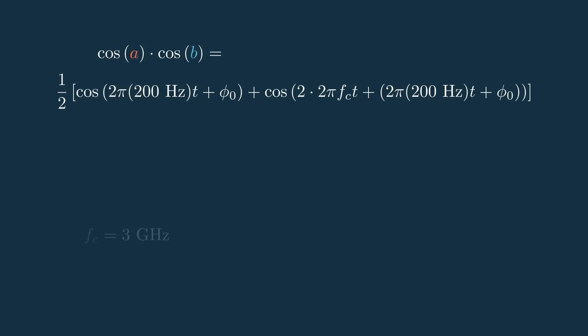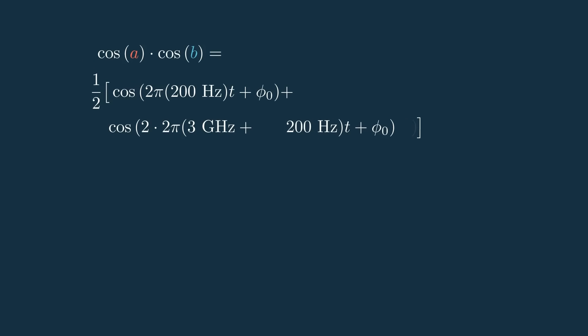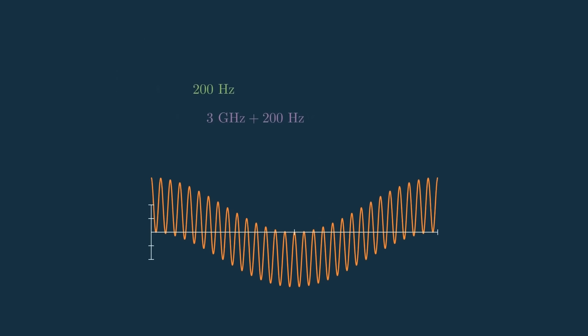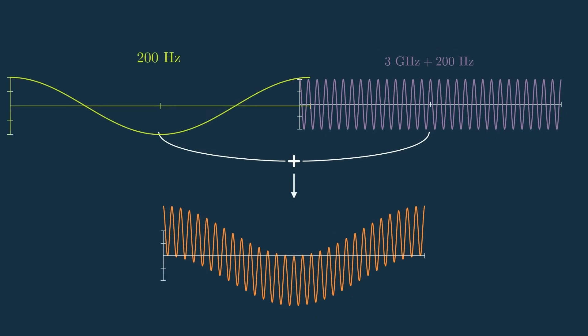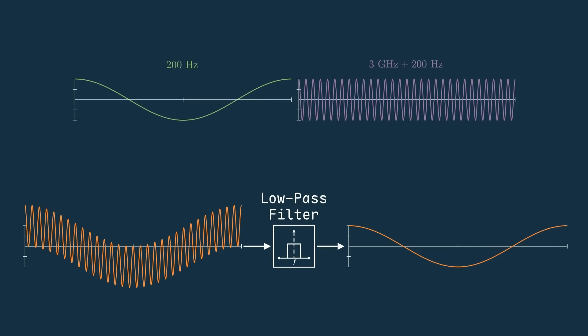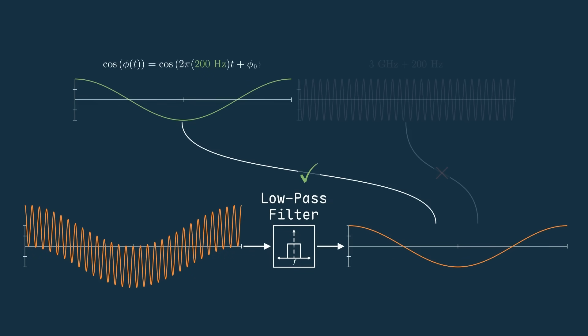Then we can plug in the carrier frequency, which we said before is 3 gigahertz. Arranging this right term a bit, we find that this is a sinusoid oscillating at 2 times 3 gigahertz plus 200 hertz, and this left term is oscillating at just 200 hertz. This will look something like this. A high frequency term and a low frequency term summed. This massive difference in frequency between the phase term and the term including the carrier frequency and phase gives us a way to isolate the phase term. And it's as simple as applying a low pass filter to let only the low frequencies pass. Or in other words, let this sinusoid through and block this one. That gives us something that is only a function of the time varying phase.